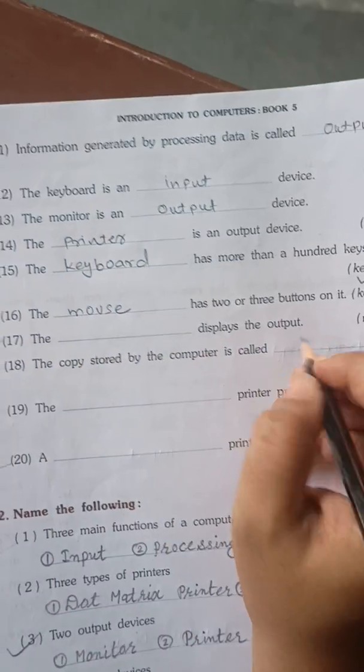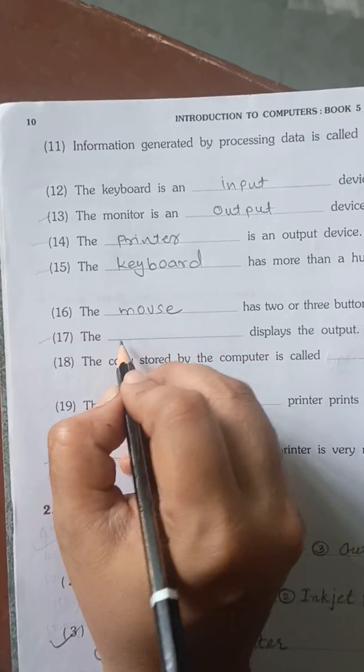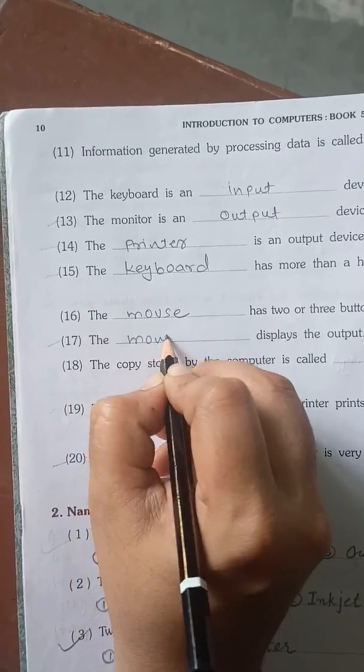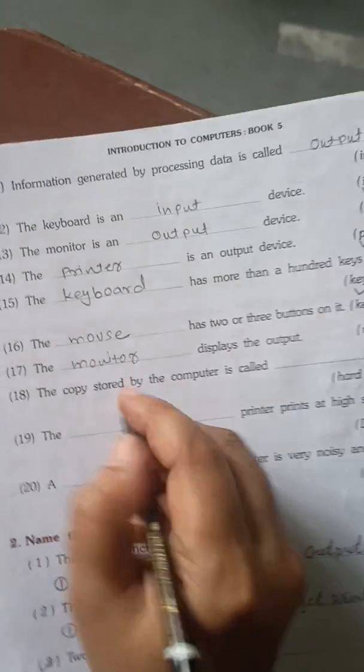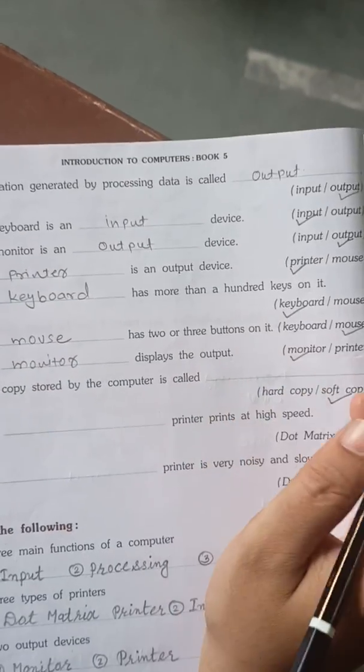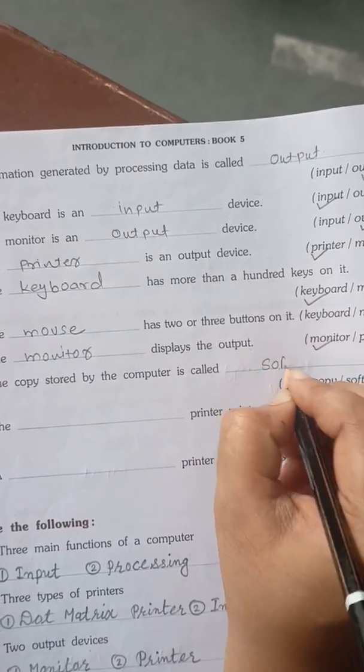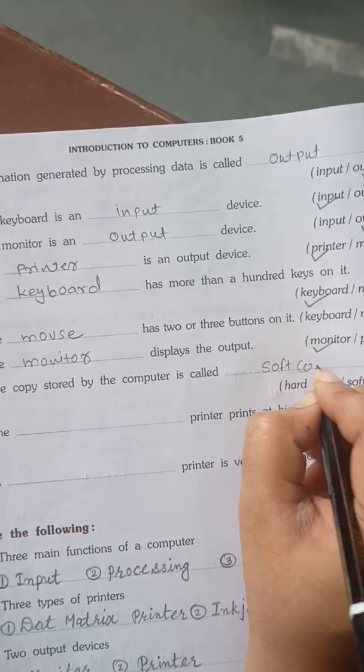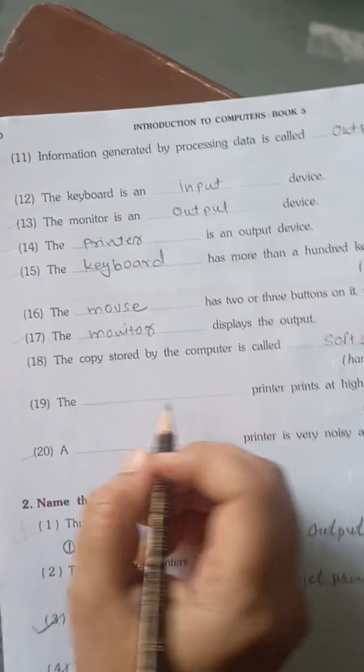The blank displays the output. So who displays? We can see through the monitor, we will call it monitor. The copy stored by the computer is called soft copy. We create it and keep it in the computer itself, we will call it soft copy.